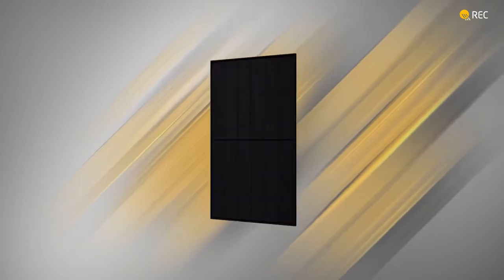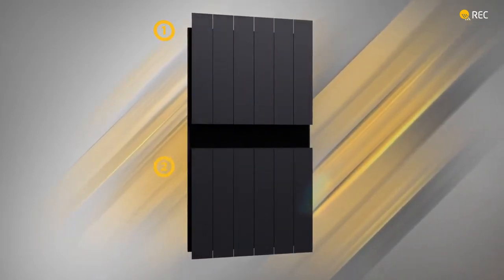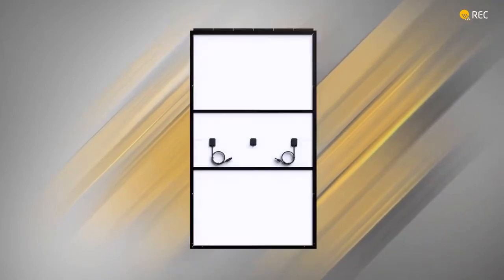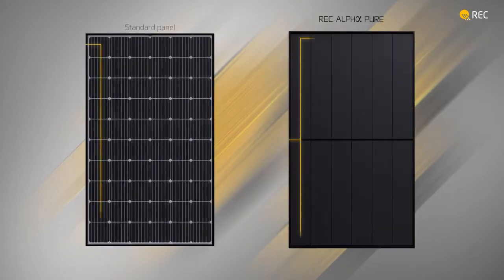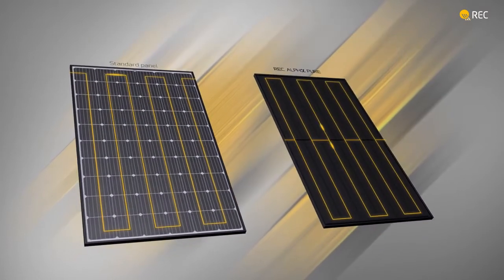The REC Alpha Pure uses REC's pioneering and award-winning twin design, where we divide the panel into two identical sections. These two halves split the current as it enters the panel, reducing resistance losses by a factor of four to give you greater power output.